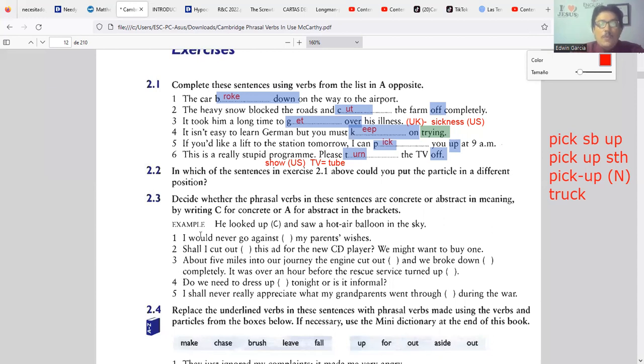Vamos a ver los siguientes. Number one dice I would never go against my parents' wishes. Nunca iría en contra de los deseos de mis padres. Entonces ir en contra, en ese caso, sería la frase verbal, que es go against. Veamos, diríamos que esto es concrete o abstract. Opínenme ustedes, díganme cómo la ubicamos esta. It's abstract, very nice. Sería algo abstracto. El ir en contra de los deseos de alguien es abstracto, no es concreto.